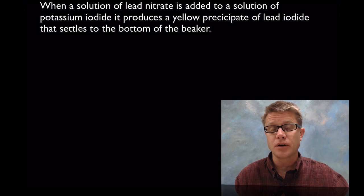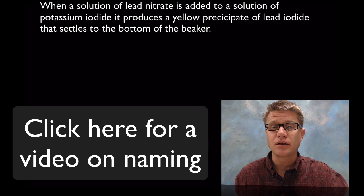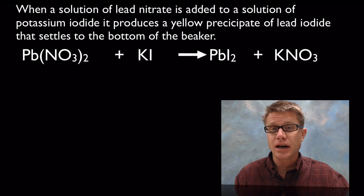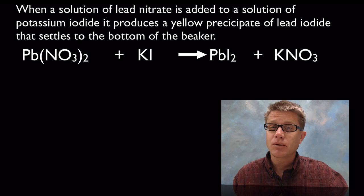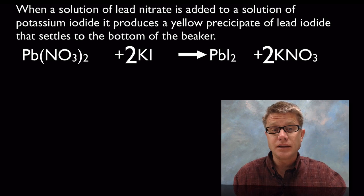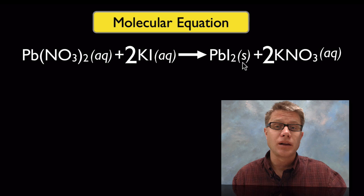If you don't know how to write from the name of a chemical to its equation and vice versa, I'll put a link to a naming compounds video that should help. So I write out all the reactants and products: lead nitrate plus potassium iodide making lead iodide and potassium nitrate. I balance it — I don't have enough iodine on the left side so I add a 2 there, now I've got too many nitrates on the left so I balance that. I also write the state: those first two were aqueous, but lead iodide is going to be a solid. Now I've got a nice molecular equation.